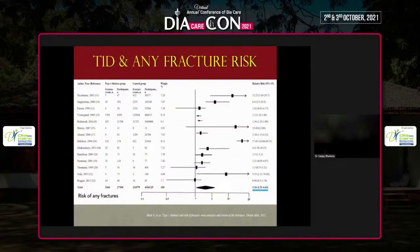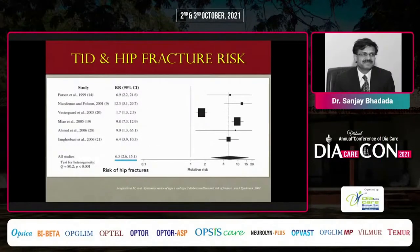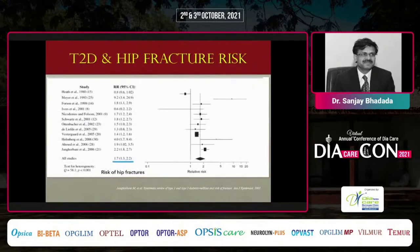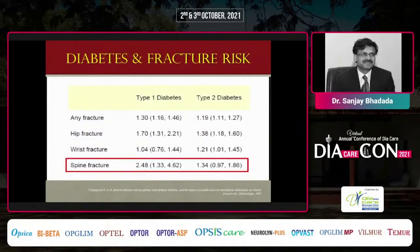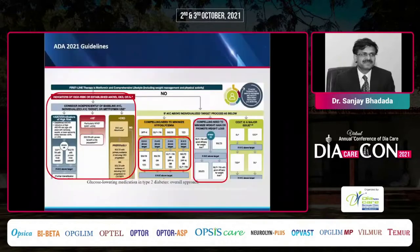Type 1 diabetes is associated with fracture risk, as documented by Meryl Shah et al., showing almost three times the risk of fracture. Hip fracture risk is nearly six times higher in type 1 diabetes. In type 2 diabetes, hip fracture risk is almost twice that of non-diabetic individuals, and spine fracture risk is around 2.5 times in type 1 and 1.4 times in type 2 compared to non-diabetics. Diabetes and hyperglycemia are clearly associated with poor bone health and increased fracture risk.